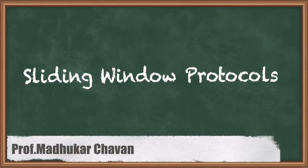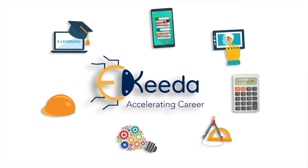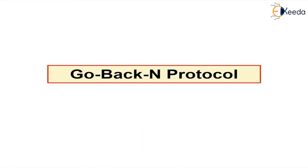Hello guys, today I am going to introduce you to two protocols: Go Back N protocol and Selective Repeat protocol. These are the two error control mechanisms used in sliding window protocol, and this sliding window protocol resides in the data link control layer of the network operating system. First we will see the Go Back N protocol.